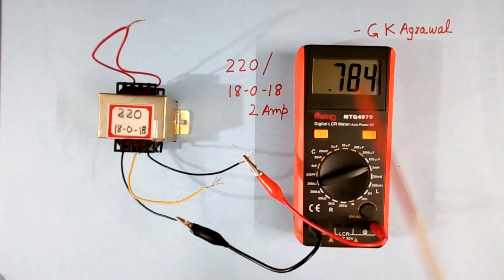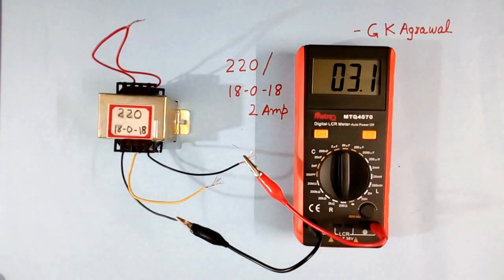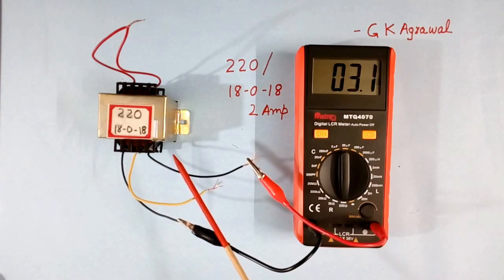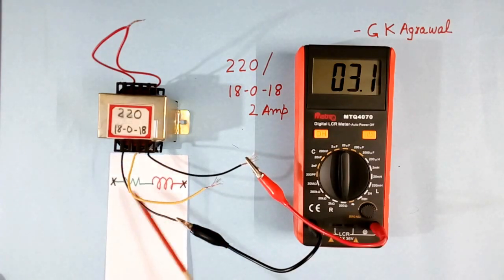We can measure resistance also of this L. This is coming 3.1 ohms. So this inductor is not behaving like a pure inductor. It is behaving like R and L.